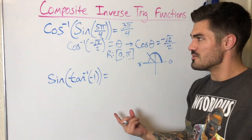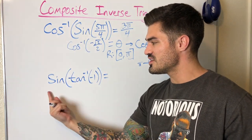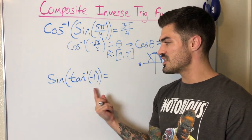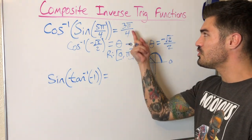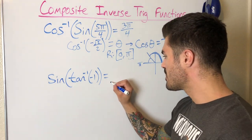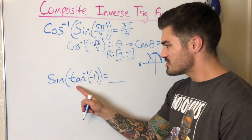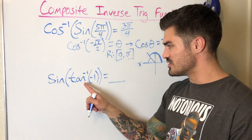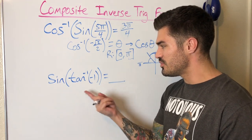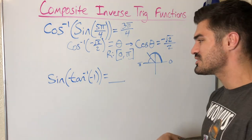Let's look at this next example. It's a little different because our outer function is just a regular sine function — not an inverse function — and our inner function is inverse tangent. In the end we're going to get just a value, not an angle. Inside, inverse tangent of negative one gives us some angle, and we take the sine of that angle. So we start from the inside: evaluate tangent inverse of negative one, replace it with that angle, then take sine of it.